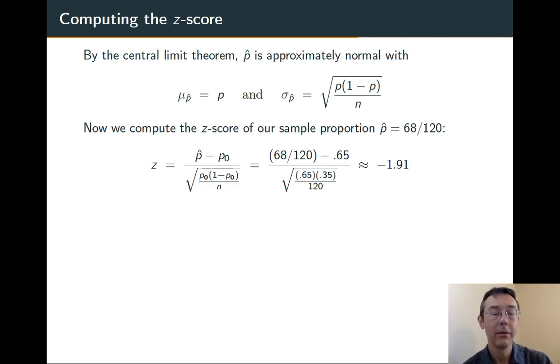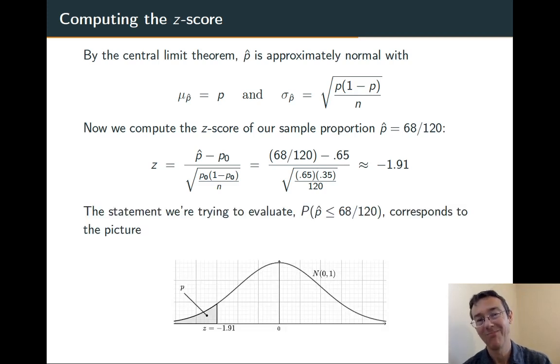We want to know the probability of getting a p-hat more extreme than the one we got. In other words, less than or equal to the one we got. In terms of z-scores, that means finding the probability of getting a z-score less than or equal to the one we got. There's the picture.